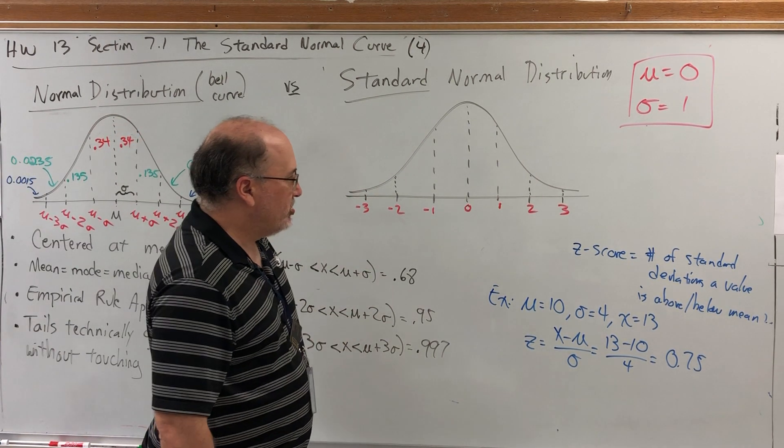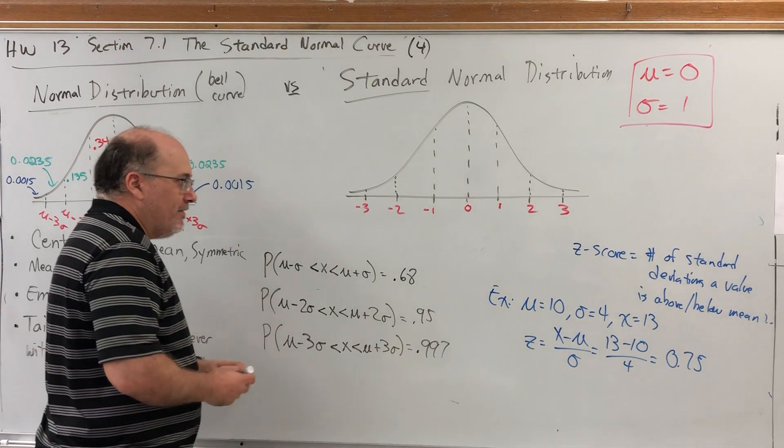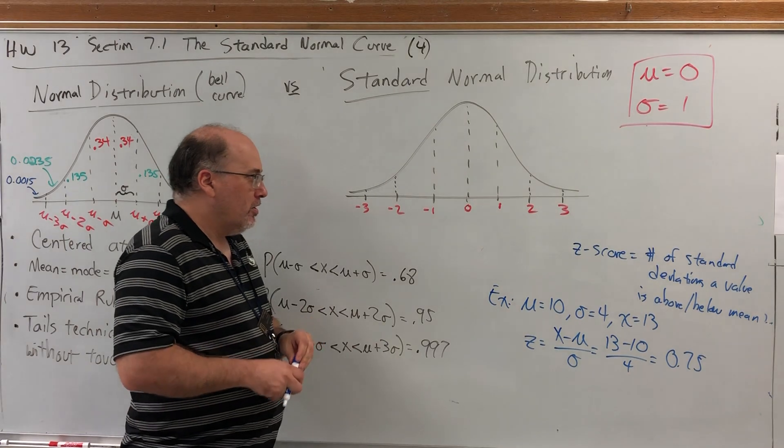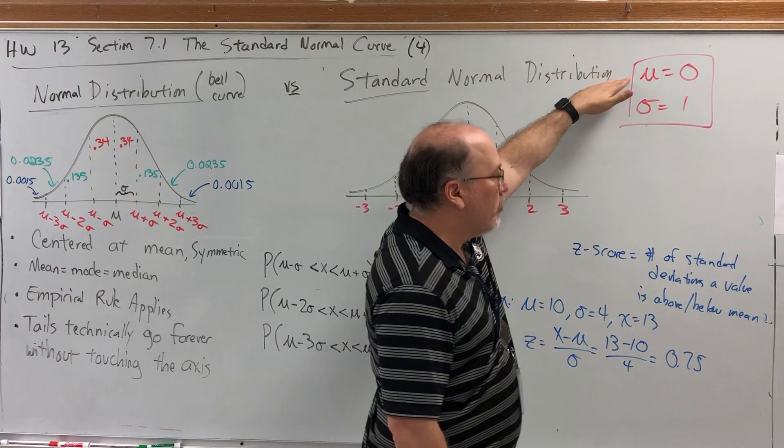And what does that have to do with the standard normal distribution? Well, let's find the value of a z-score for any value whose distribution is the standard normal distribution.